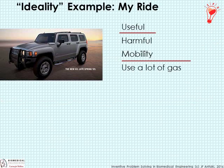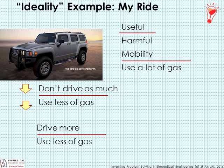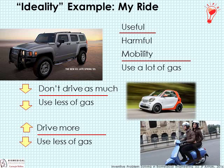Returning to the automobile example — if I wanted to invent a better automobile, I would look at the Ideality: the useful function of providing mobility against the harmful function of using a lot of gas. I could reduce gas use by simply not driving as much, but that doesn't invent anything — that's a compromise, not improving Ideality. If I can somehow drive more and use less gas, that improves Ideality, and that is something inventive.